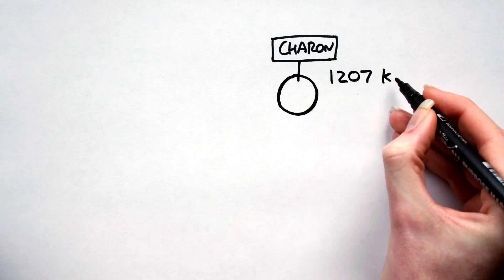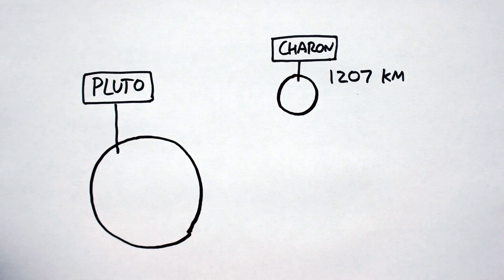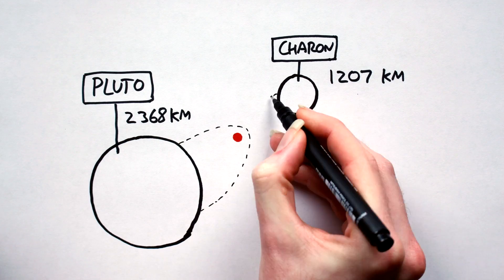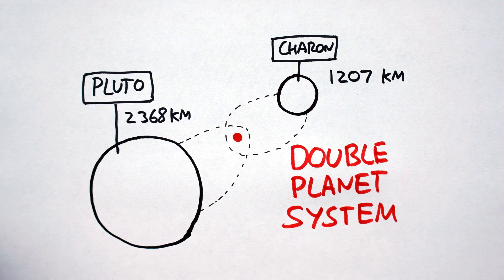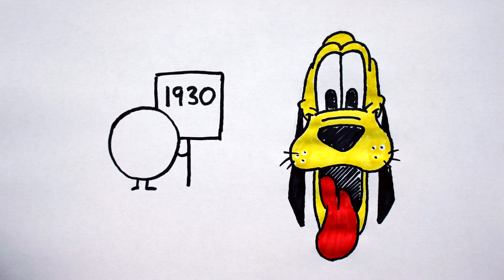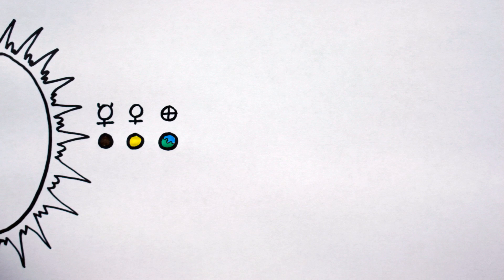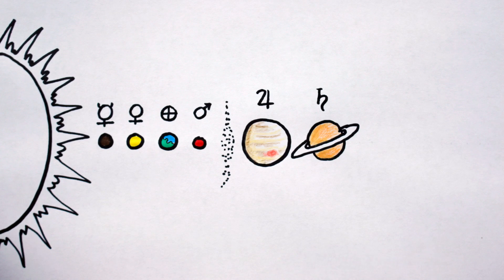Discovered in 1930, Pluto, obviously named after the cartoon dog, was hailed as the ninth planet and held that position for about 70 years. But as far as planets go, it was pretty weird.